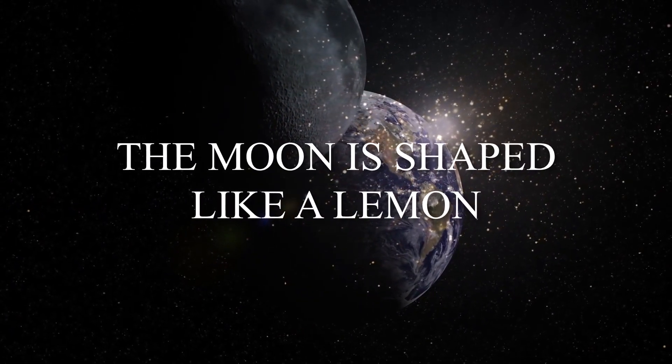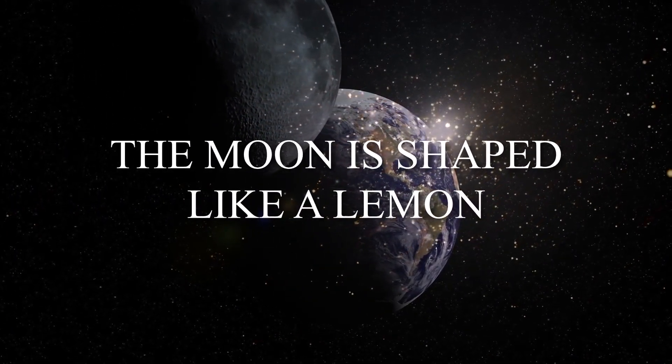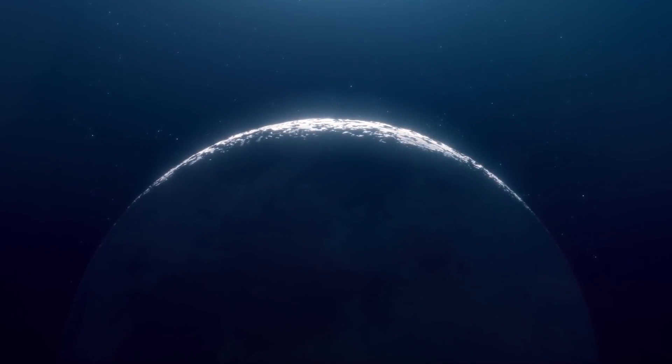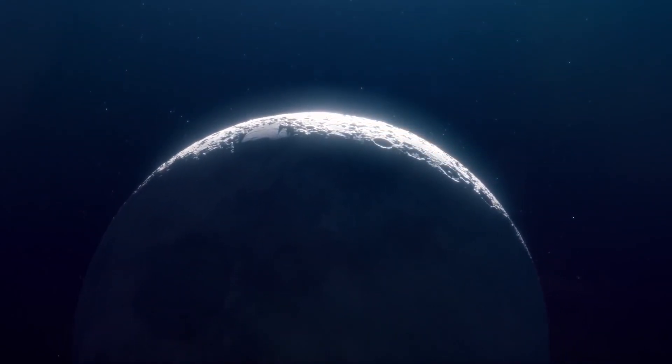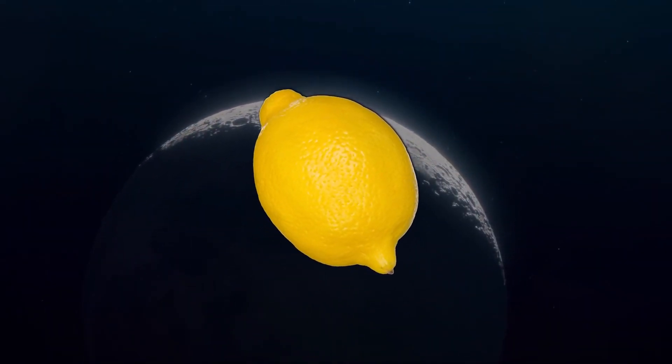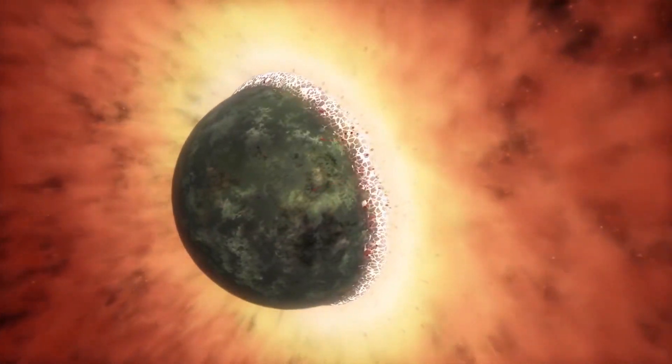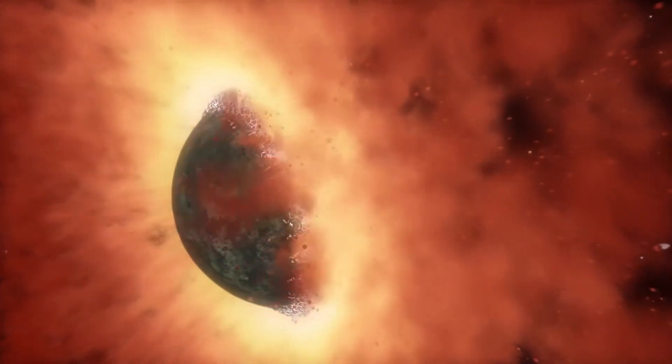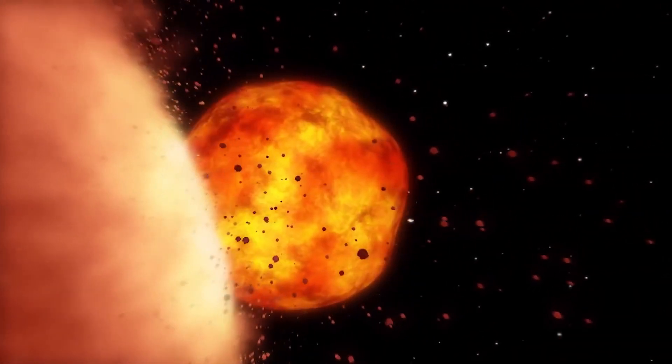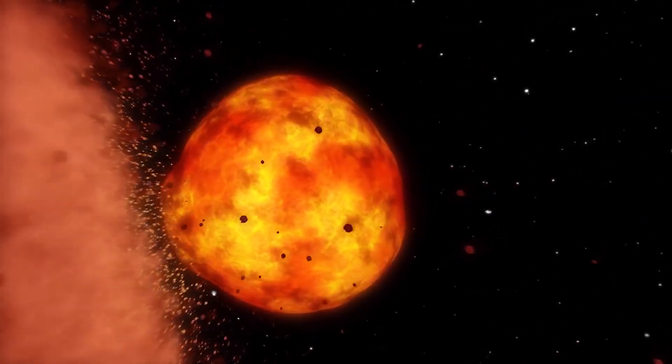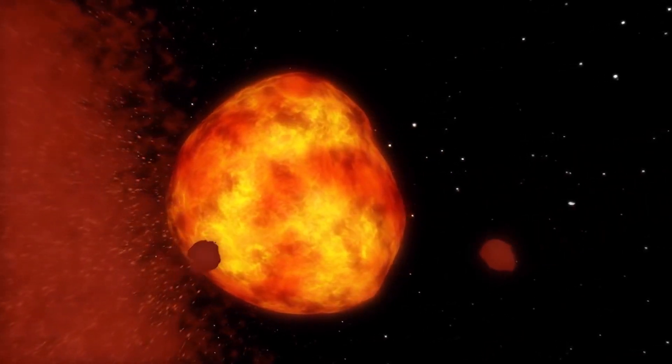Number seven: The moon is shaped like a lemon. Okay, before you run outside tonight to prove this wrong, hear us out. If you hold a lemon a certain way, it looks round, right? Well, our moon was formed at nearly the same time as Earth, and it was formed hot. It was also closer to Earth then, which created its odd shape that can easily be seen from space.